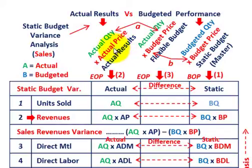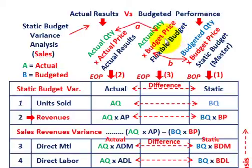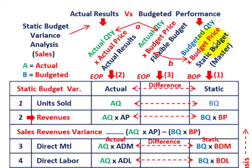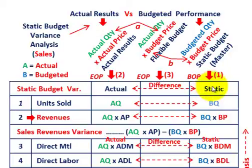With this static budget analysis, we're looking at our budgeted amounts versus our actual results. Normally you'd also determine a flexible budget — actual quantity times some budgeted price — but we don't include that here. All we're looking at is the difference between our static or master budgeted amount and the actual results for the period.